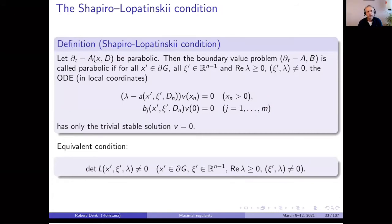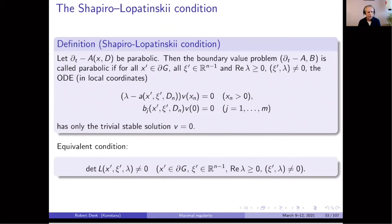Typically you have a second order operator and you have one boundary condition. The Shapiro-Lopatinskii condition is natural in the sense that I consider this locally at some point on the boundary. Then I make a Fourier transform in the tangential variables, and what I receive is an ordinary differential equation in the normal direction. This combination of differential operator and boundary operators should have a unique solution. This is a natural condition if we want to solve the whole equation. I also told you about the Lopatinskii matrix, which is an equivalent description as the invertibility of some matrix.